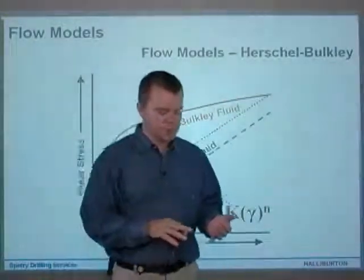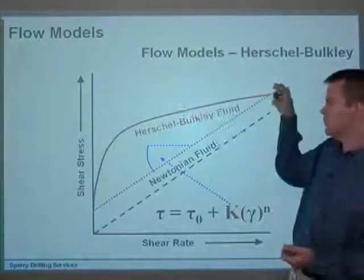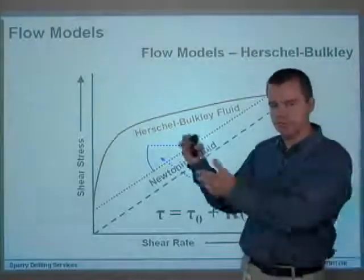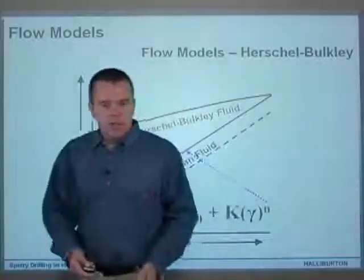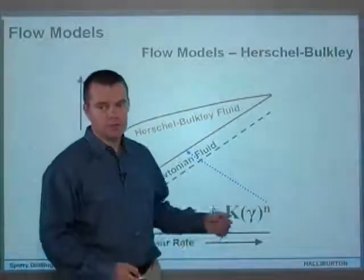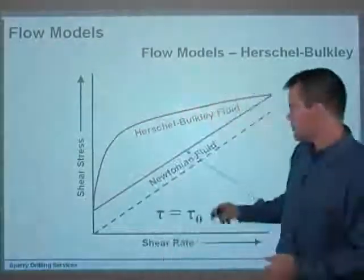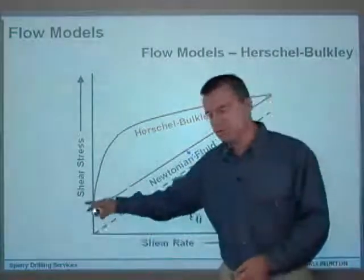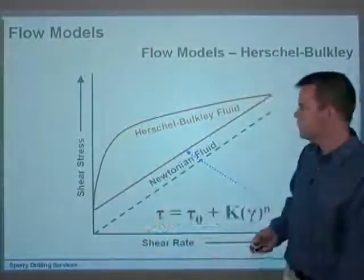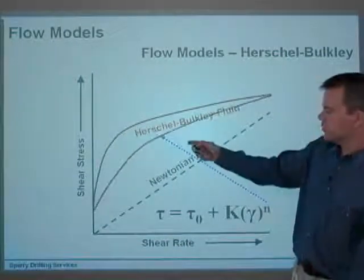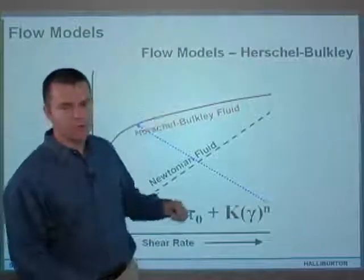One of the beauties of this model is that you actually input six rheological values, and it will change n and K, producing a curve for the annulus and for the pipe flow area as well. K basically determines the slope of the line. N describes the degree of non-Newtonian behavior: if n equals 1, then it's a straight line, pretty much parallel to the Newtonian fluid line, but tau-zero being greater than zero shifts that line up, giving it a yield point. If you decrease n slightly, the curve becomes more and more curved off the straight line.